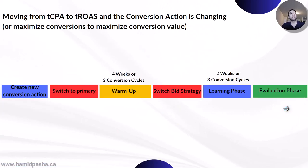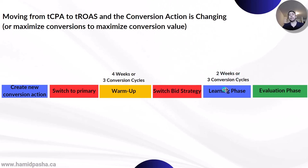This is how the workflow looks like. First, you create the new conversion action. Then, you switch the new conversion action to primary. Then, you still keep bidding toward target CPA in the warm-up period for four weeks to populate data for the new conversion action. Then, it's time to switch the bid strategy from tCPA to tROAS. After that, you should expect two weeks of learning phase, and then you will be in the evaluation phase — you can start evaluating and analyzing your data.